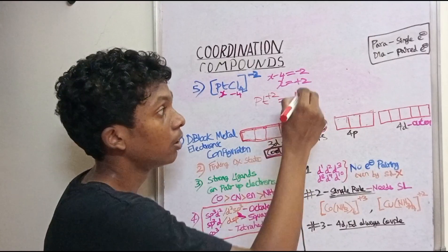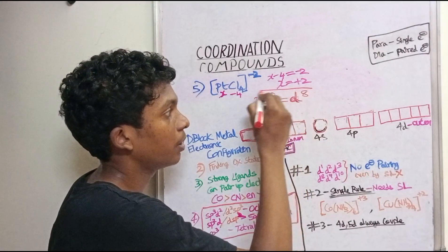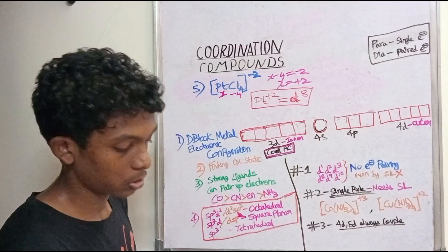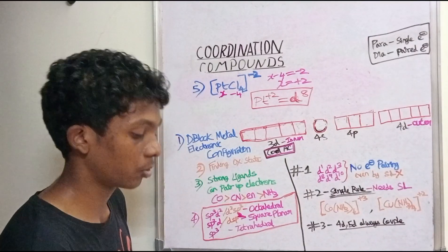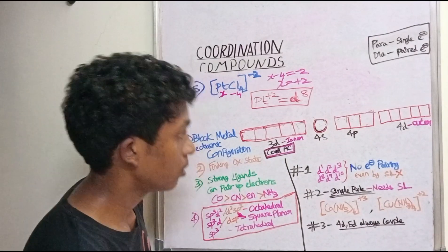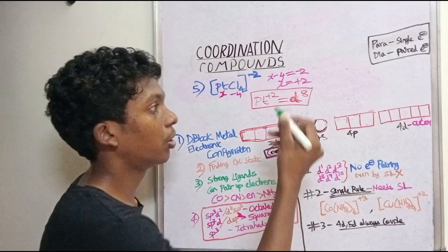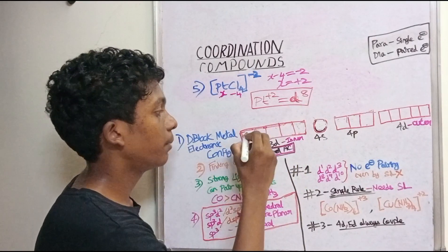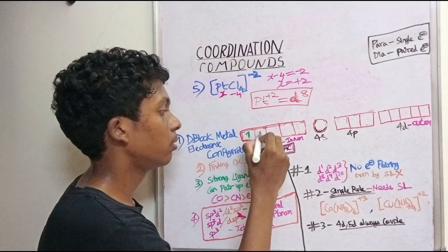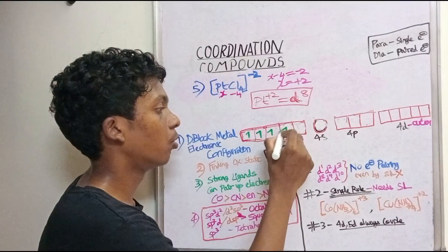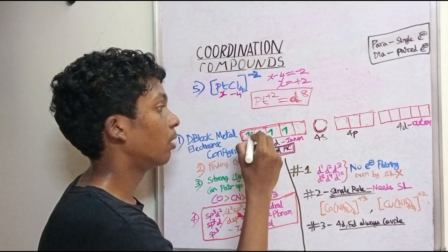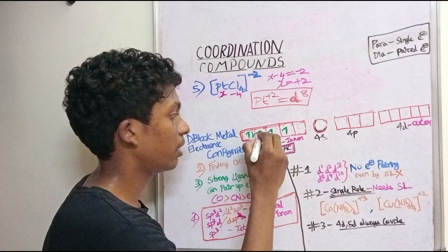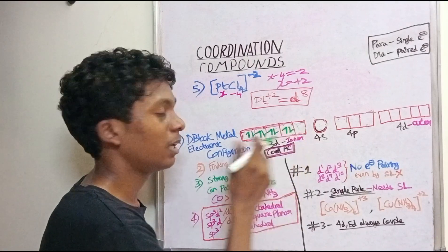Platinum is a 5d element with a D8 configuration. So we fill in 1, 2, 3, 4, 5, 6, 7, 8 electrons in the 5d orbital.